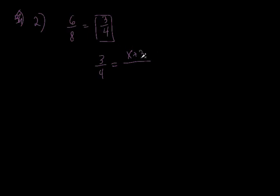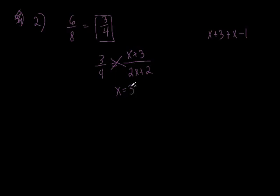You have to compare x plus three — that entire side of that small triangle — to the entire side of the large triangle. So what would that entire side of the large triangle be? It would be x plus three plus x minus one, which is two x plus two. That's the whole entire side. So you compare the side of the small triangle to the side of the big triangle. Then you cross multiply, solve for x, plug it back in — you should have gotten x is three. Plug it back in: PS is six, PR is eight. That right there was the toughest part about that problem.